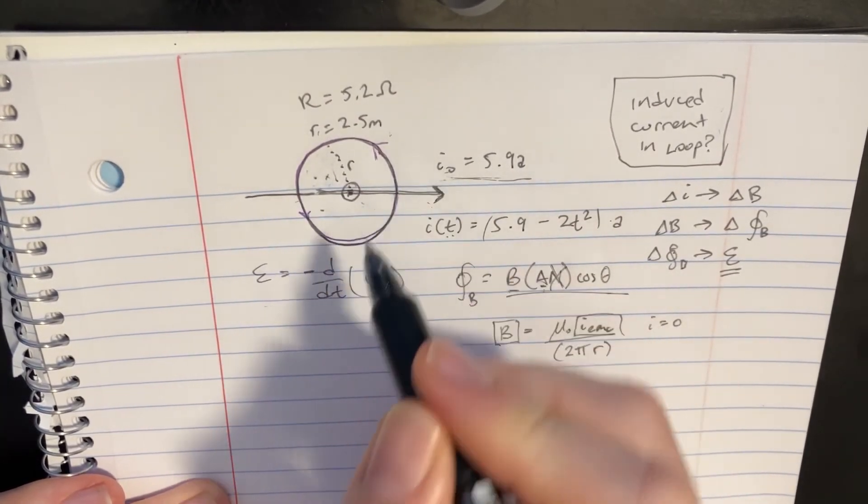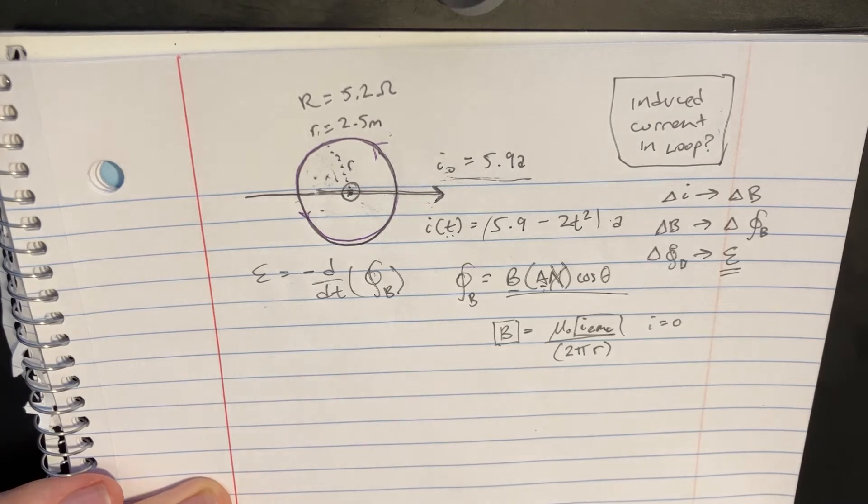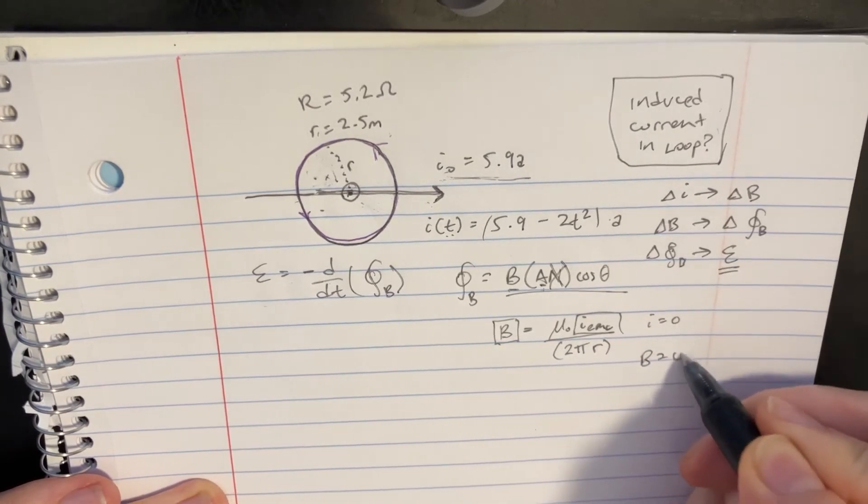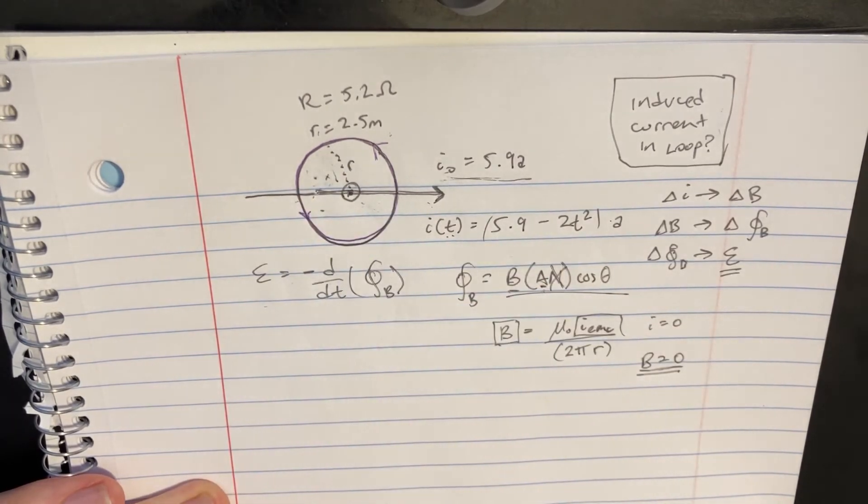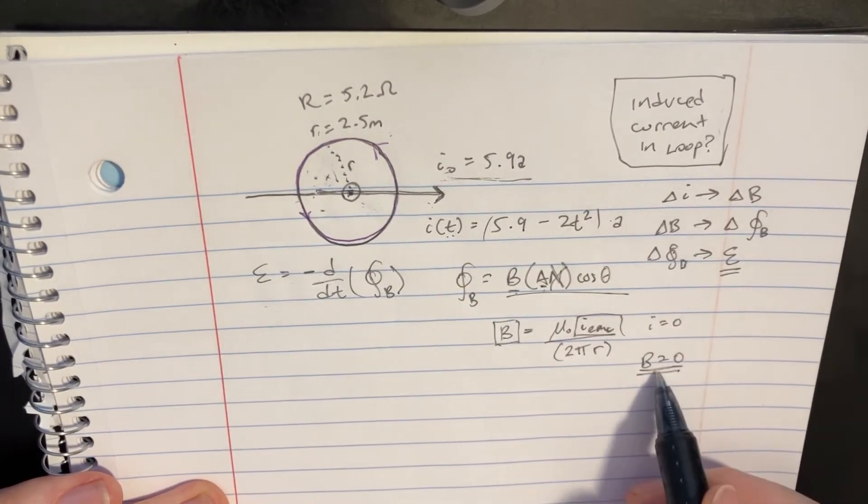There's no current because it's not going into or out of the page. So therefore, the B would be 0 for inside of this loop. So that's one way we could figure out what that B is.